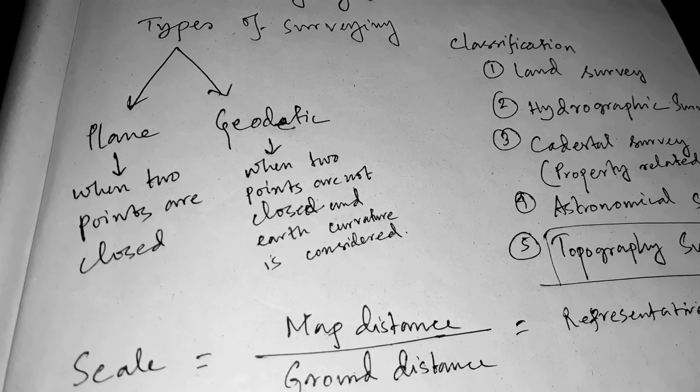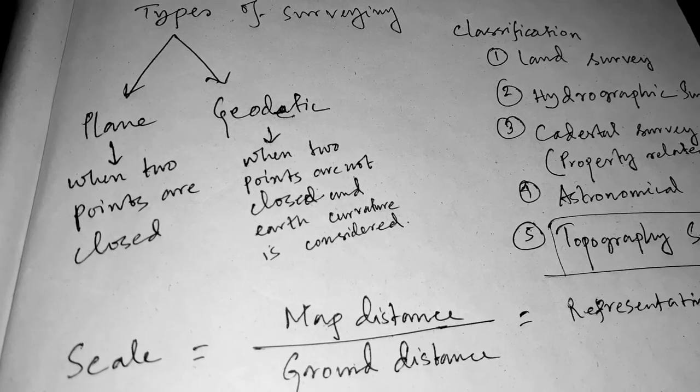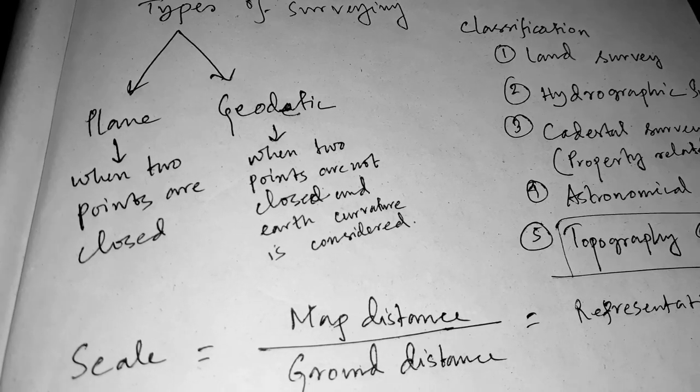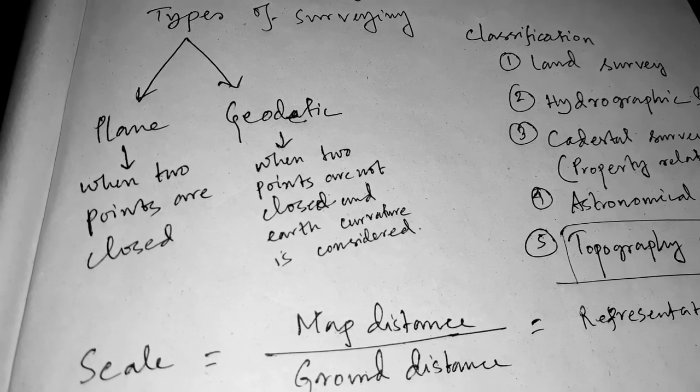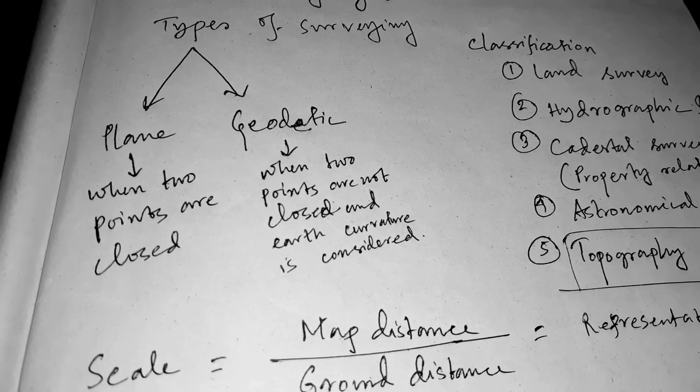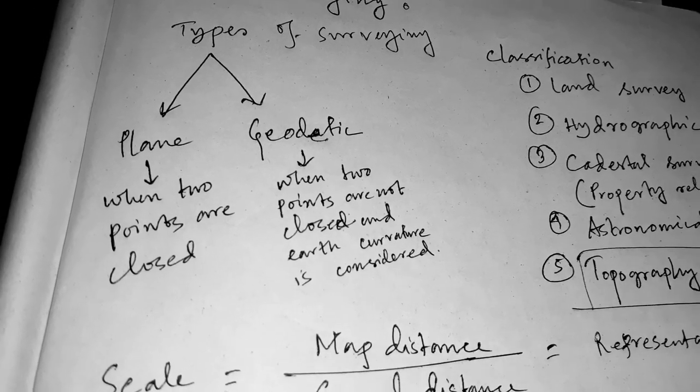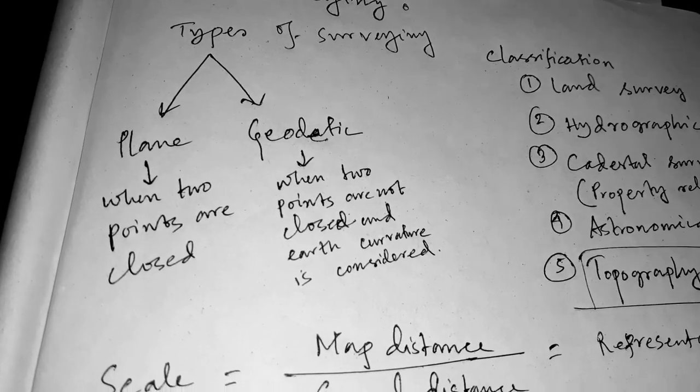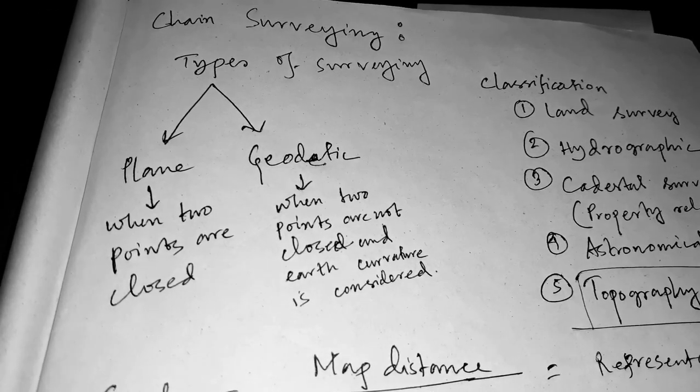Surveying is the art of determining the relative position of points on, above, or the surface of the earth by means of direction or indirect measurement of distance, direction, and elevation. Chain surveying is the type of surveying in which only linear measurements are taken in the field.